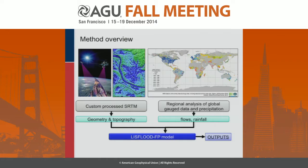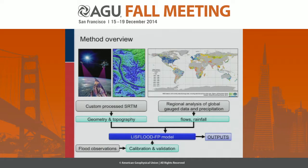The flows and rainfall come from a regional analysis of global gauge data and precipitation. We've just had a paper on this accepted in Water Resources Research. Essentially, we take the GRDC data and do a regionalized flood frequency analysis, so we can get the T return period flows for any point on the global river network. Then, as a typical hydraulic model, you take some flood observations and calibrate and validate.